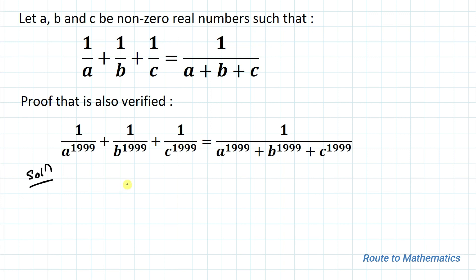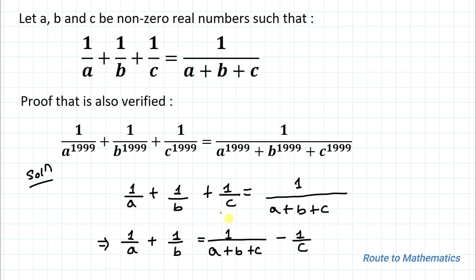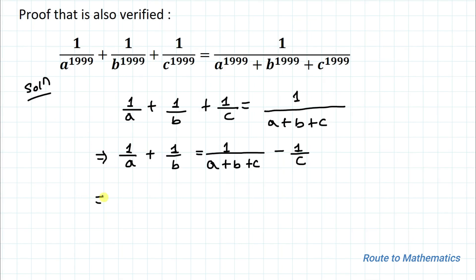So we have 1/a + 1/b + 1/c = 1/(a+b+c). In the next step we can write 1/a + 1/b = 1/(a+b+c) - 1/c. In this step I have just taken 1/c to the right-hand side. Now let's take LCM.